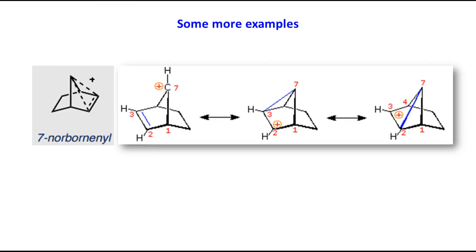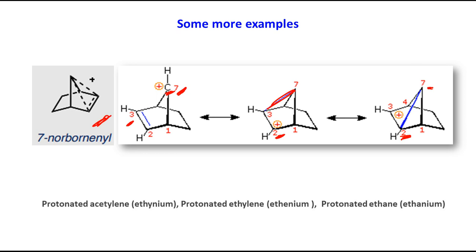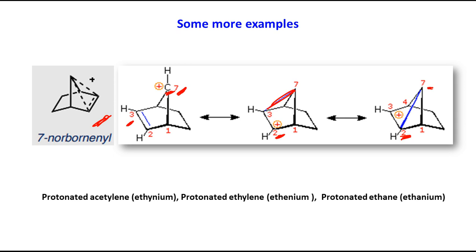The next example is again a non-bonded bicyclic system but with the positive charge at position 7. If a new bond forms between C3 and C7 and the C3–C2 pi bond (shown in blue) breaks, a C3–C7 sigma bond is formed. Another possibility: the C3–C2 pi bond breaks and the new bond forms between C2 and C7, putting the positive charge over C3. The average structure combines these contributions.